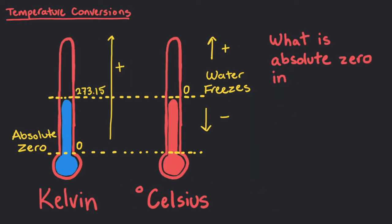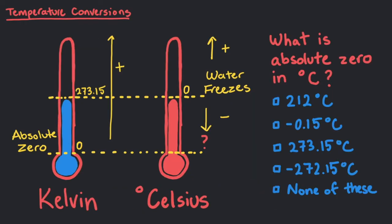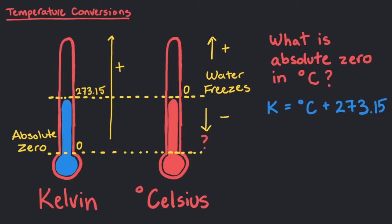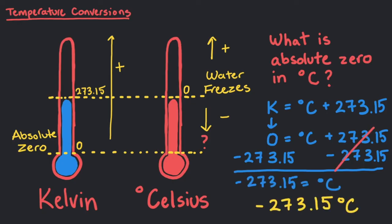What is absolute zero in degrees Celsius? That's right! With the earlier equation, we can substitute the Kelvin temperature for zero and then subtract 273.15 from both sides. This leaves us with negative 273.15 degrees Celsius.